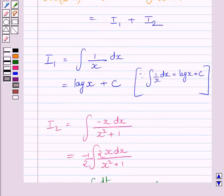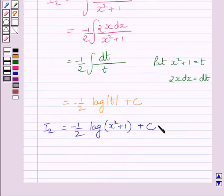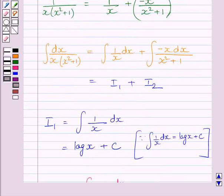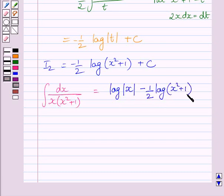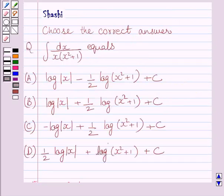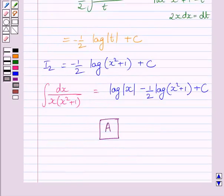Now substituting the values of I1 and I2, the integral of dx upon x multiplied by x squared plus 1 is equal to log x minus 1 upon 2 log of x squared plus 1 plus c. This is I1 and this is I2. So our correct answer is A. This completes the session. Hope you understood the solution. Take care and keep smiling.